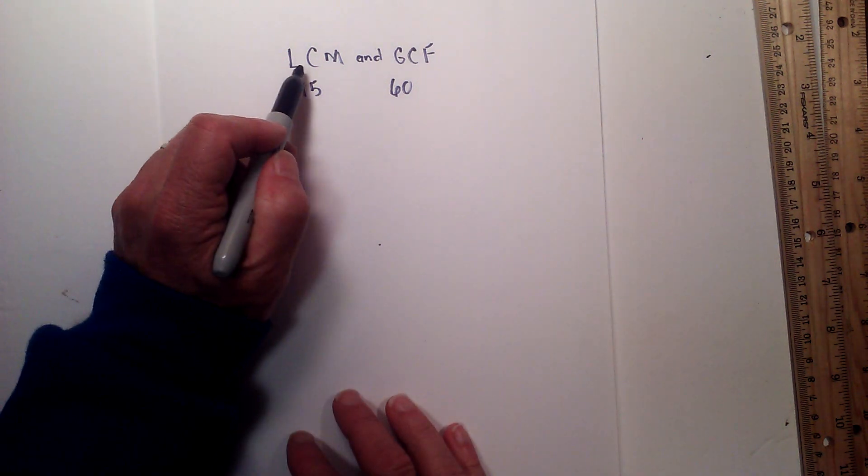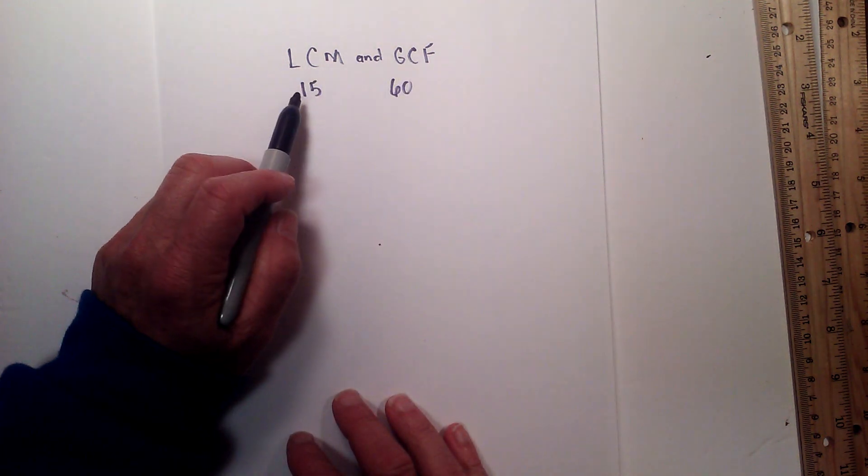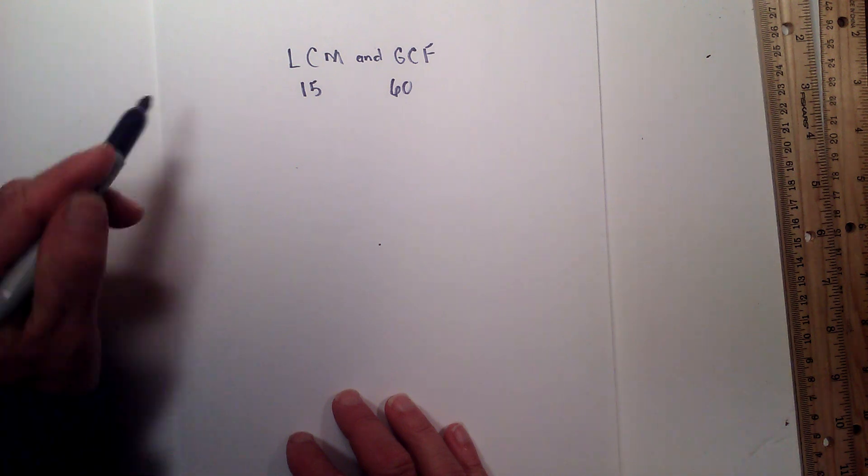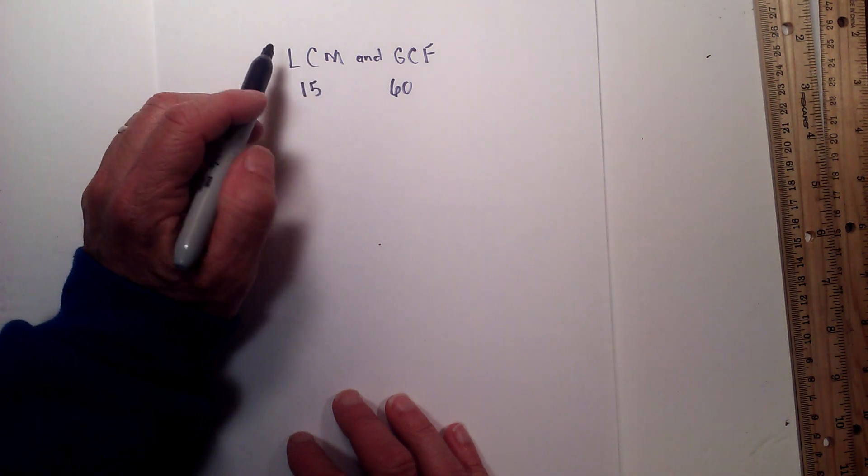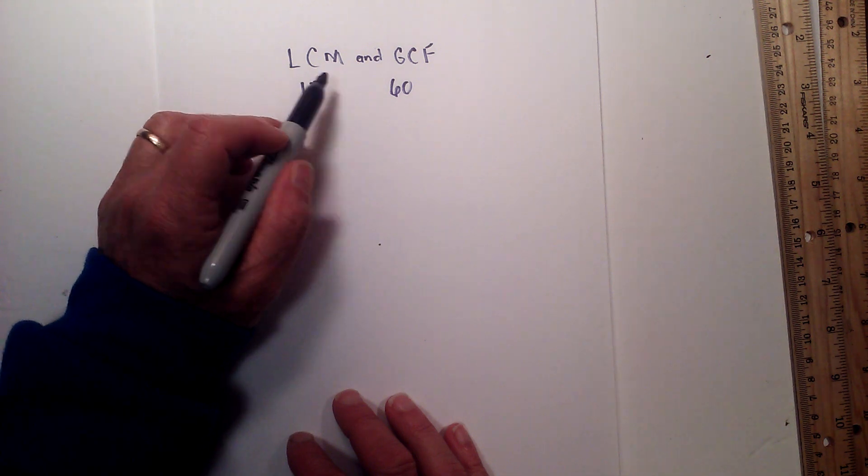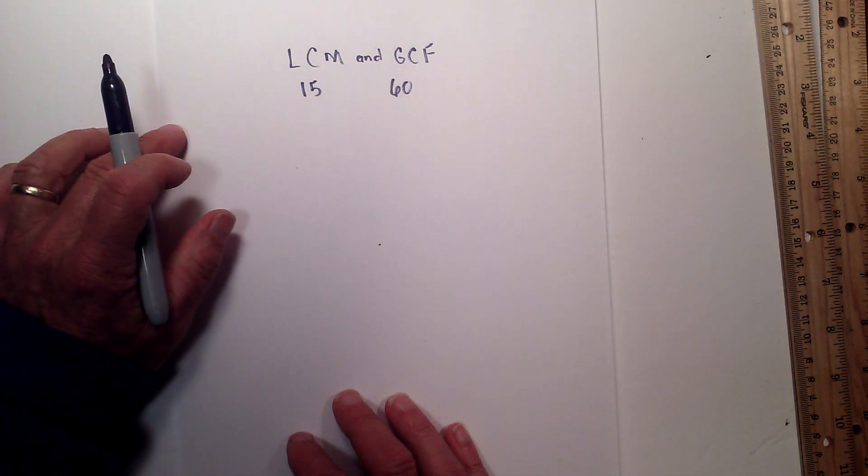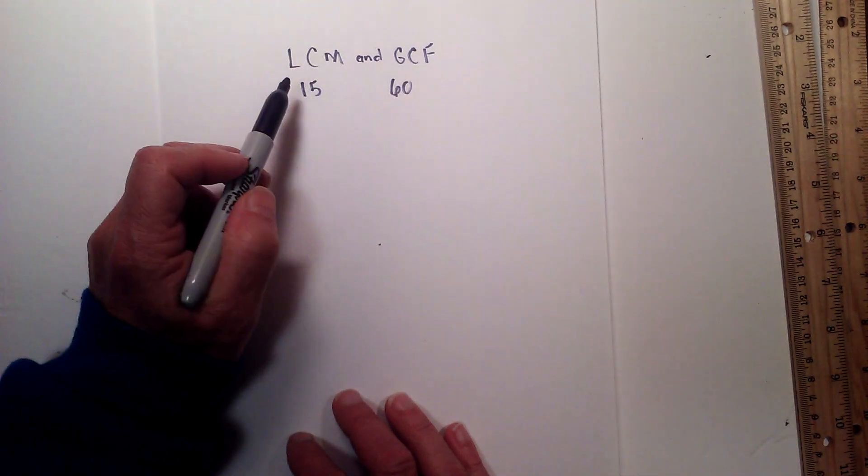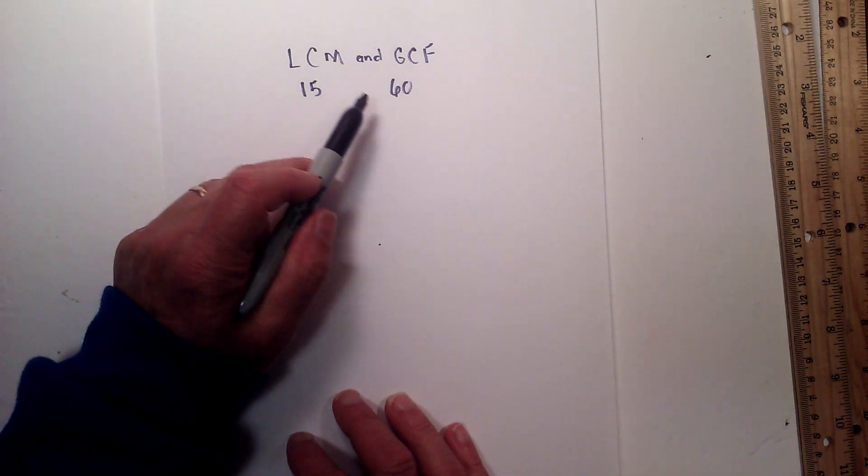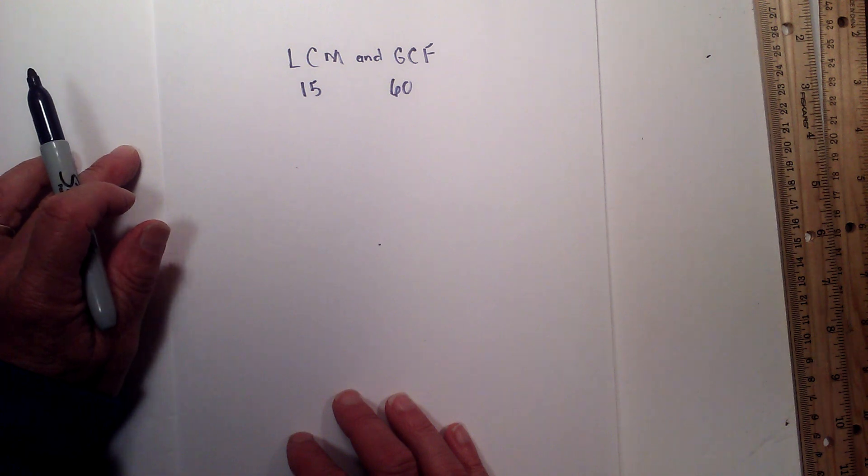Finding the LCM and GCF of 15 and 60. The lowest common multiple is the smallest number that both of these numbers will multiply into evenly, and the greatest common factor is the smallest number that multiplies into both numbers evenly. So let's go ahead and find them.